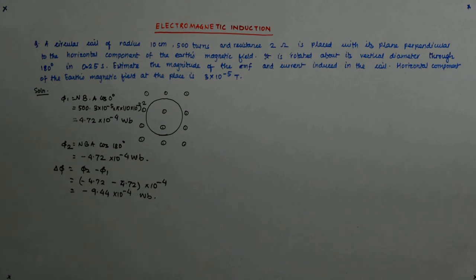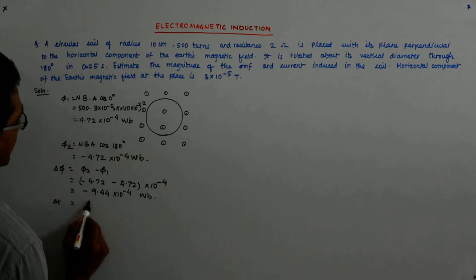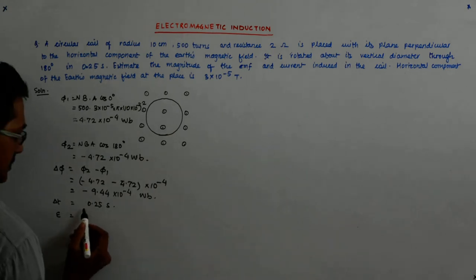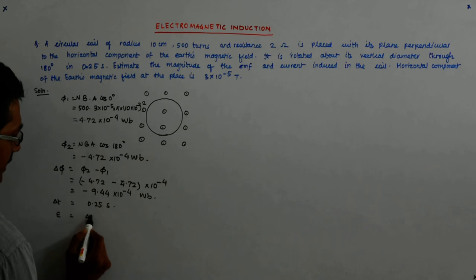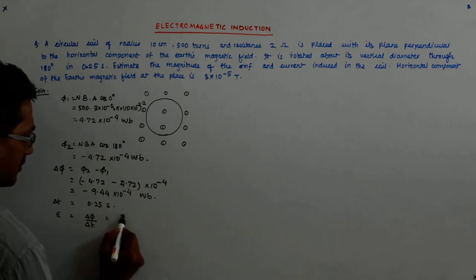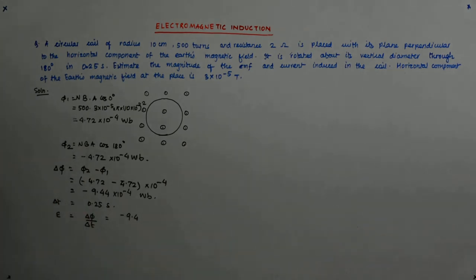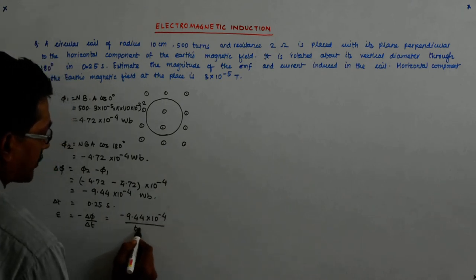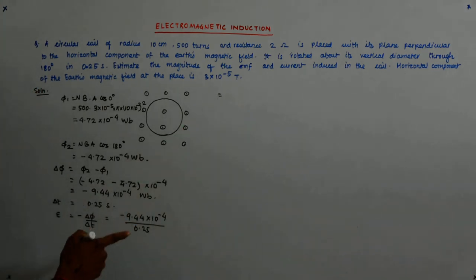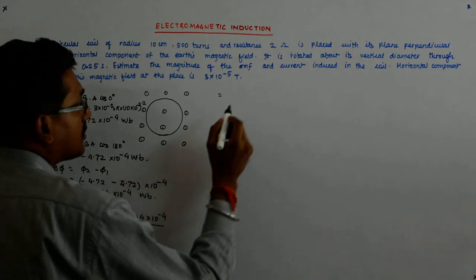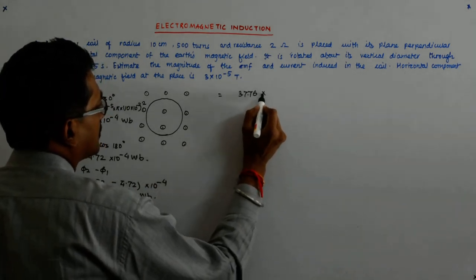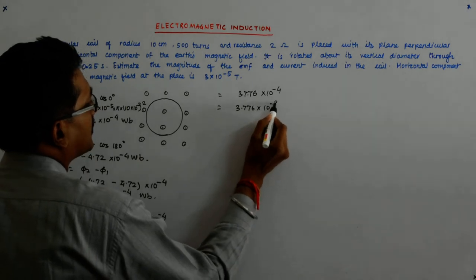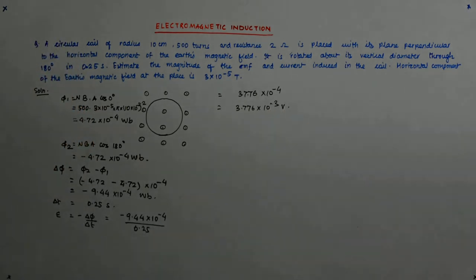And what is the time? Δt is equal to 0.25 seconds. So E is Δφ upon Δt, which is -9.44 divided by 0.25, that gives me 4 times this, which is 3.776 × 10^-3 volts.